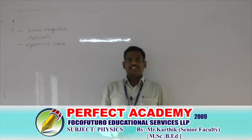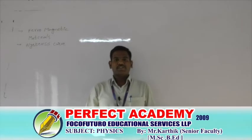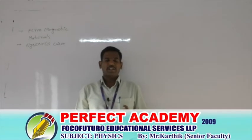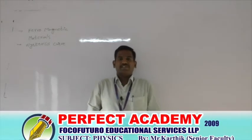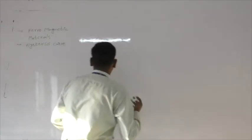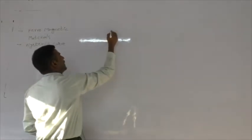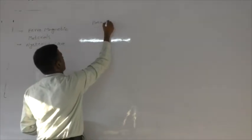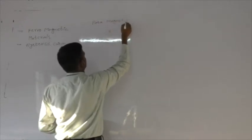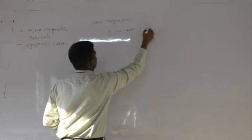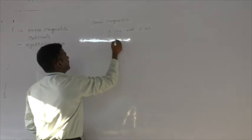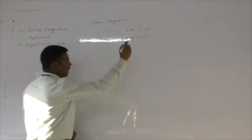Welcome back. In the last session we understood the properties of paramagnetic and diamagnetic materials. Now, the magnetic susceptibility of paramagnetic materials is positive and greater than one, and the relative permeability is also positive and greater than one.